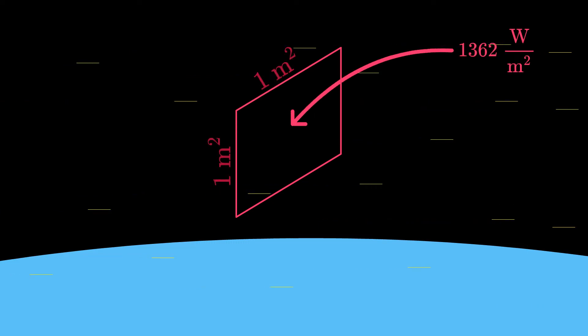If you measure the Sun's power around the Earth, you would measure 1362 watts per meter squared. This is also called the solar constant.